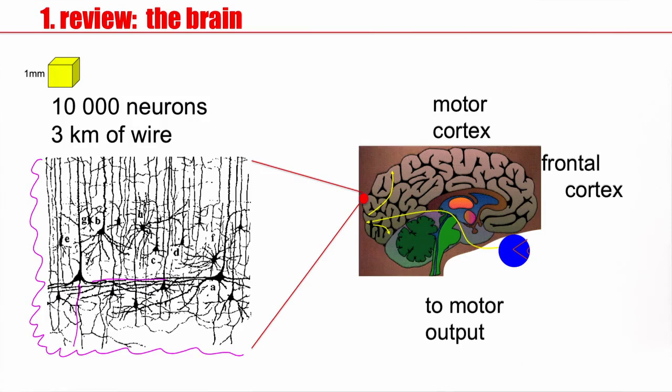If I have 10,000 neurons in a cubic millimeter, you can imagine that I have lots of neurons, billions of neurons, 10 to the 10 neurons in the whole brain. This is a lot.